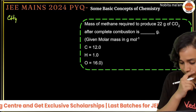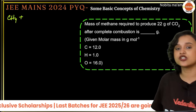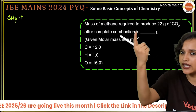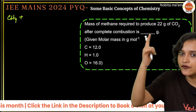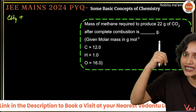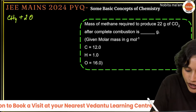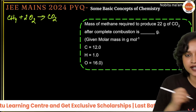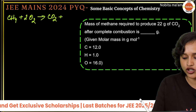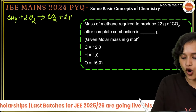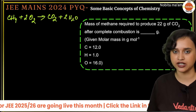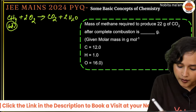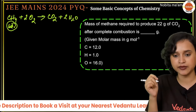For CH₄, using the general formula, oxygen required = x + y/4 = 1 + 4/4 = 2 moles of O₂. So the balanced equation is: CH₄ + 2O₂ → CO₂ + 2H₂O. We need to find the weight of methane, and we are given 22 grams of CO₂.